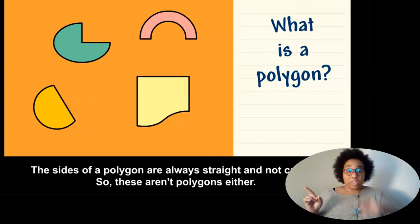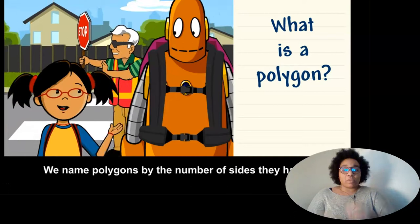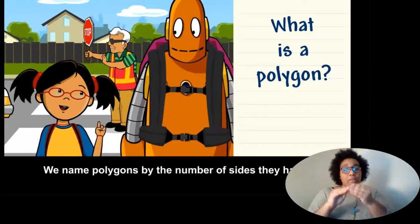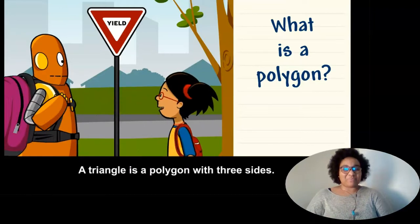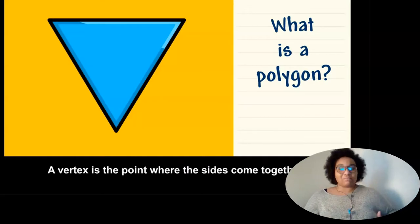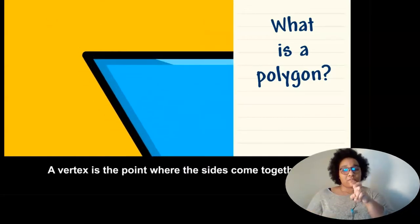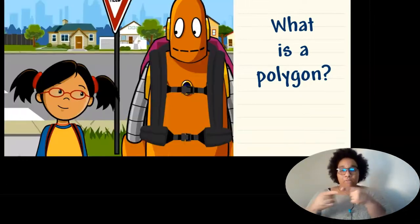The sides of a polygon are always straight and not curved, so these aren't polygons either. We name polygons by the number of sides they have. A triangle is a polygon with three sides. A vertex is the point where the sides come together. A triangle has three vertices.